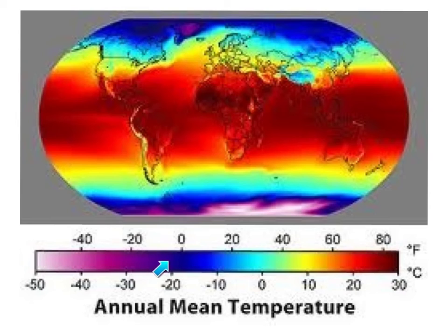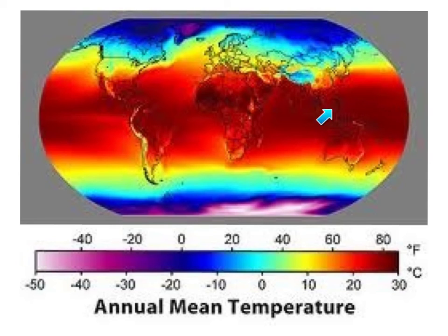The key tells you what the different colors mean. When you look at this globe that's been flattened out, you can tell that the red pieces through here are 30 degrees on average, while the blue here is more like negative 20 degrees.